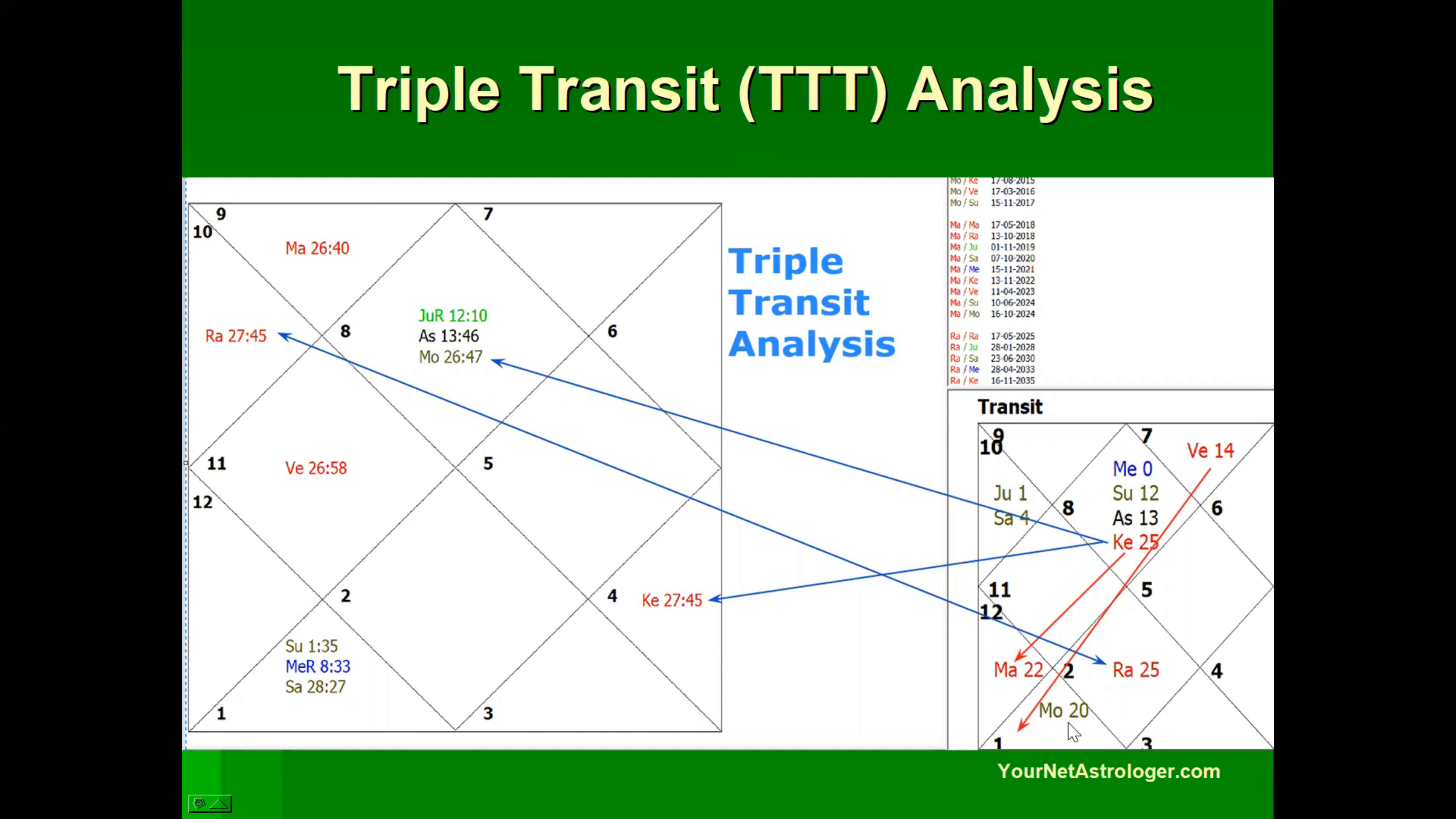And now we see transit to natal. In transit Ketu is placed in Scorpio at 25 degrees and in natal chart it is afflicting natal moon with a close conjunction. It is afflicting its own natal position also. We see that the nodes are stationary in transit and they are stationary around their natal degree only. So that is a very difficult time for the native when transit nodes and natal nodes are at same degree and stationary. This is how we synthesize the impact of sub-period lord and triple transit analysis.